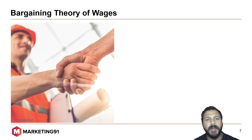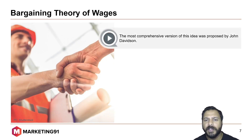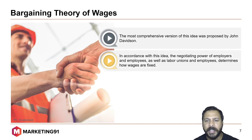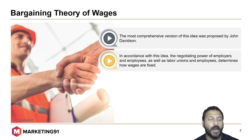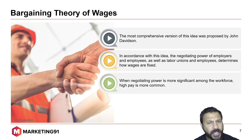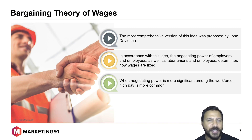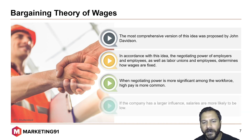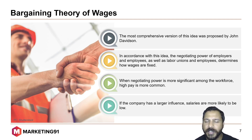Moving on to the final one, the bargaining theory of wages. The most comprehensive version of this idea was proposed by John Davidson. In accordance with this theory, the negotiating power of employers and employees, as well as labor unions and employers, determines how wages are fixed. When negotiating power is more significant among the workforce, high pay is more common because unions would negotiate on their behalf with the employer. If the company has a larger influence, salaries are more likely to be low because the employer has an upper hand over the employees and the union.